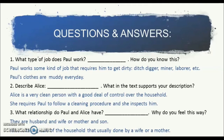Question number two: Describe Alice. From the situation given, you can infer that Alice is a very clean person with a good deal of control over the household. What in the text supports your description? She requires Paul to follow a cleaning procedure as she inspects him. Question number three: What relationship do Paul and Alice have, and why do you feel this way? You can infer that they may be husband and wife, or mother and son. This is because Alice is taking care of the household, which is usually done by a wife or a mother.